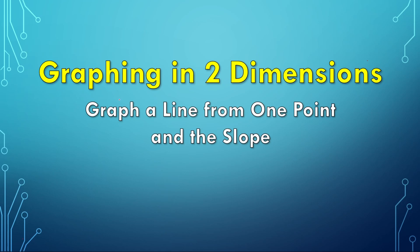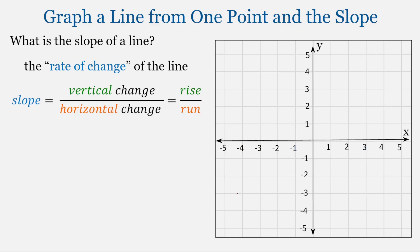Today we will practice graphing a line using a single point and the slope. Graphing a line using a point and the slope is like having a treasure map. We start at one point, and we're told we need to take a certain number of steps north, then turn east and do another fixed number of steps. Wherever we land, that's x marks the spot. The slope of the line tells us how to move, and that point tells us where to start.